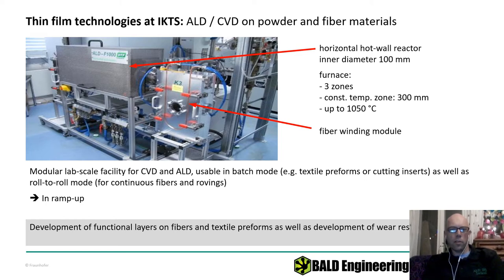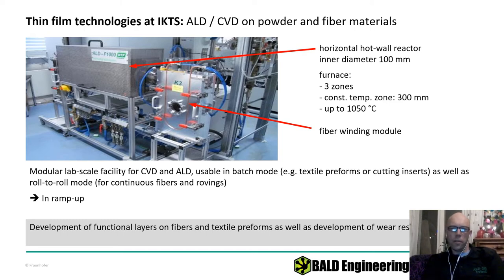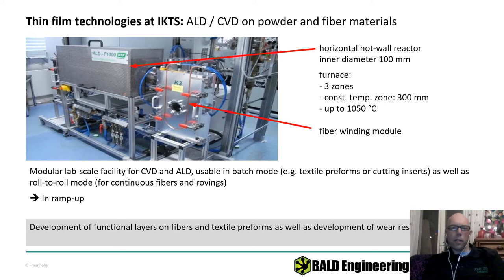We have a horizontal ALD-CVD furnace, a three-zone furnace — you can stick in anything you like. We have different modules: roll-to-roll wire modules and this rotating drum. We can go up to 1050°C, which is where the Inconel gets too weak. It's an Inconel outer reactor with a quartz insert.